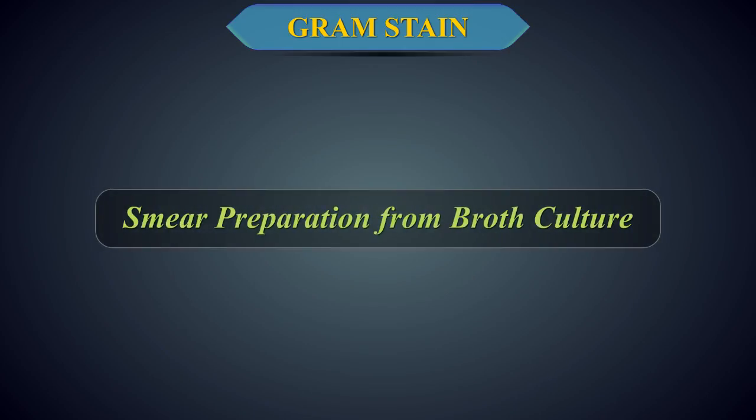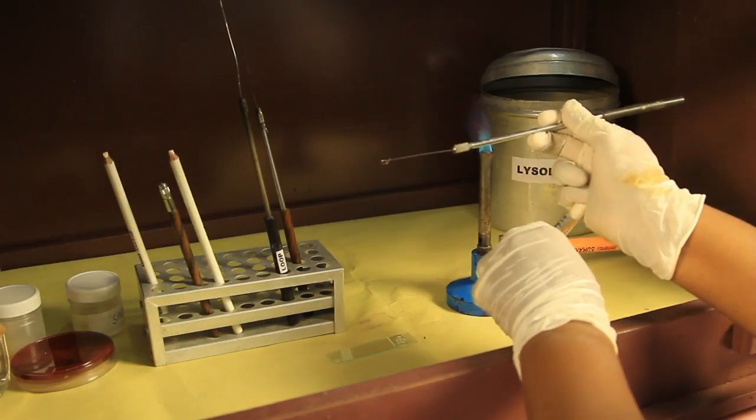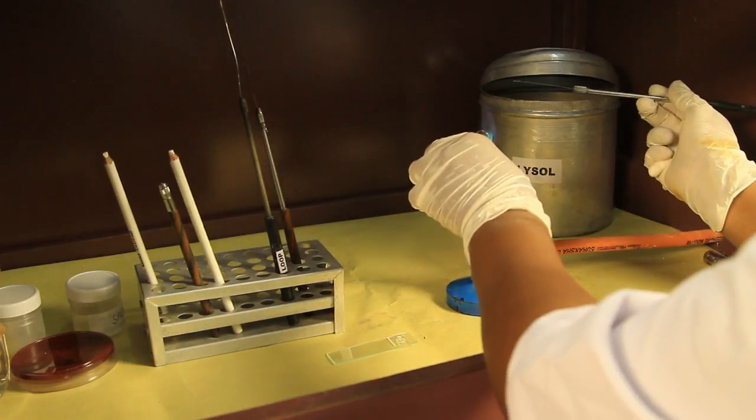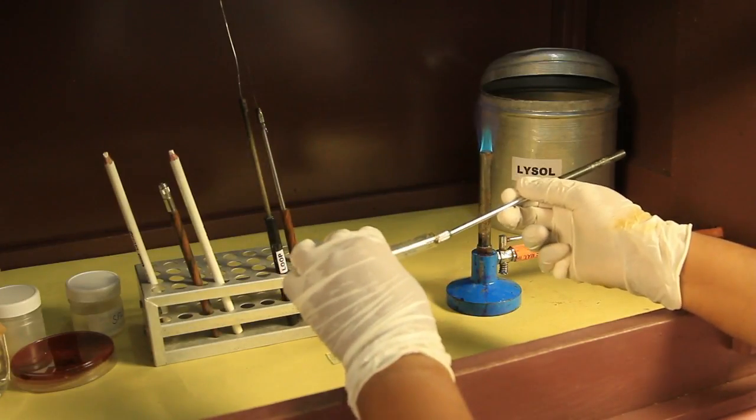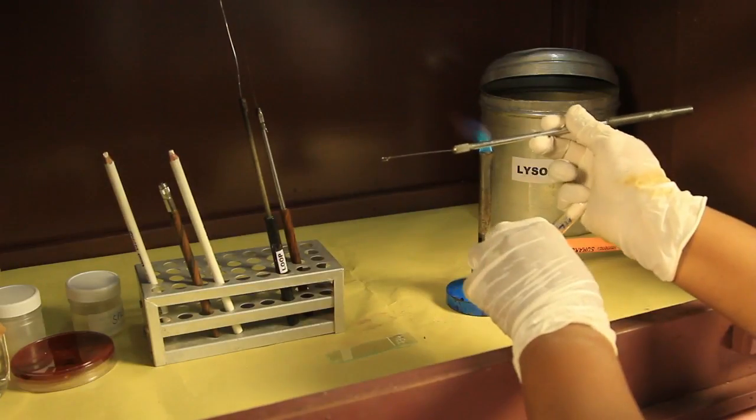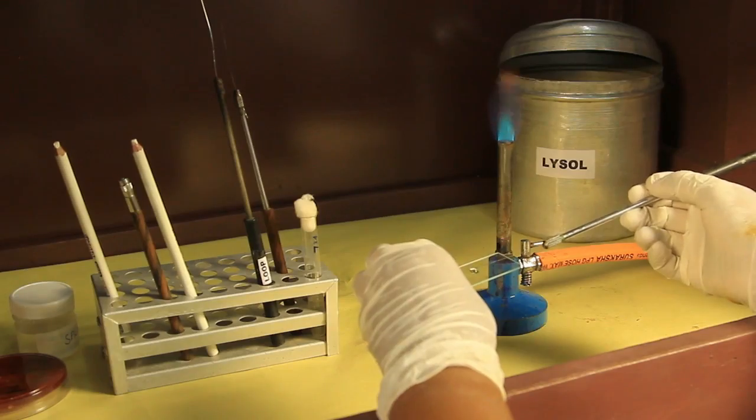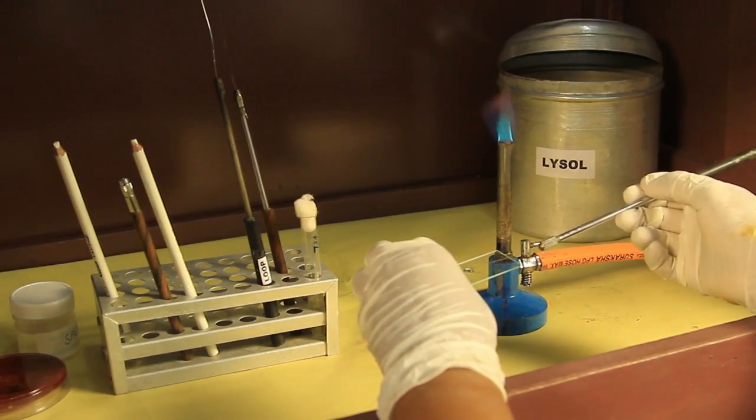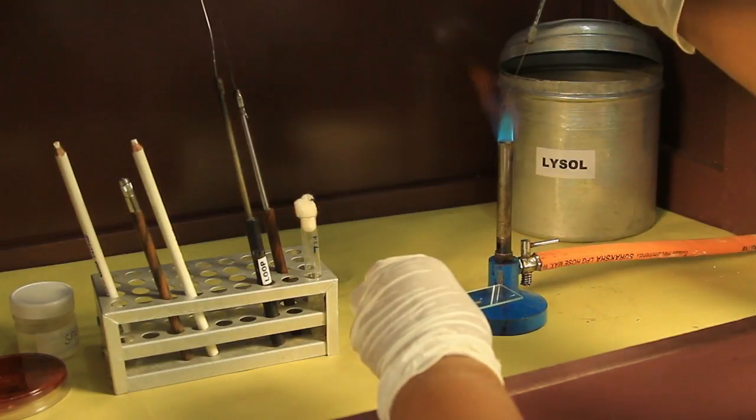Smear Preparation from Broth Culture. Take a tube of broth culture and remove its cotton plug. Flame the mouth of the tube and pick a loopful of broth culture with a sterile inoculating loop. Replace the cotton plug and put the tube aside. Spread the loopful of the culture onto the middle of a labeled slide and let it air dry. Sterilize the inoculating loop.